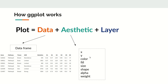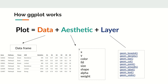The commonly used aesthetics are x, y, color, fill — fill is used for filling shapes like box plots or bar plots — size for the line or symbols, shape, alpha for transparency, and weight for line thickness. We simply need to map the data column to whichever aesthetic we want. Once that mapping is done, we need to specify what kind of plot we want — that is, which layer we want.